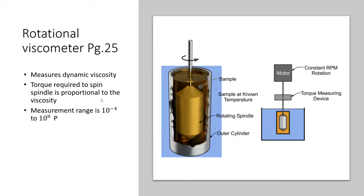The rotational viscometer has a motor, involves rotation, and therefore involves force — so we know we're measuring dynamic viscosity. The principle: it measures the torque required to spin an object in the sample. The amount of force required is proportional to the viscosity. If the fluid were water, the drum would spin relatively easily; if filled with honey, you'd need to constantly apply force. That force is proportional to the viscosity.